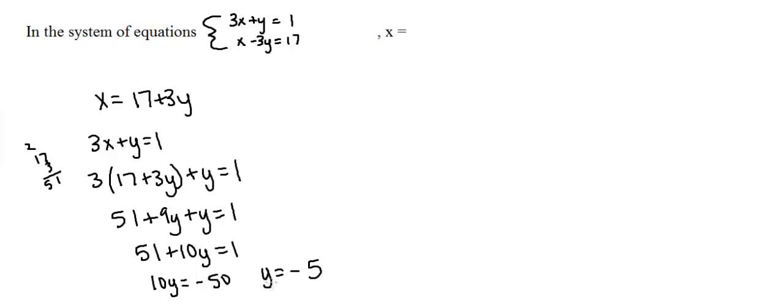Now the question asks for what x is. So we have to plug in this value of y into one of the equations to solve for x. So we'll get 3x minus 5 equals 1. All I did was just plug in the value of y equals negative 5 for y. So now we'll get 3x is equal to 6 and we'll find that x is equal to 2. This way is called substitution.